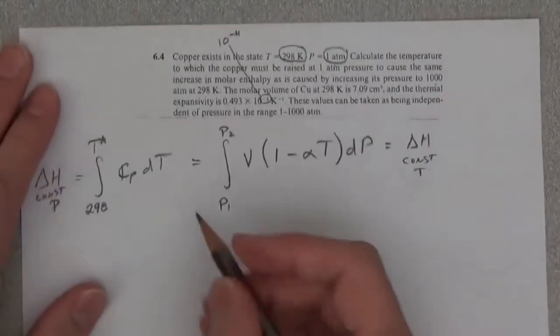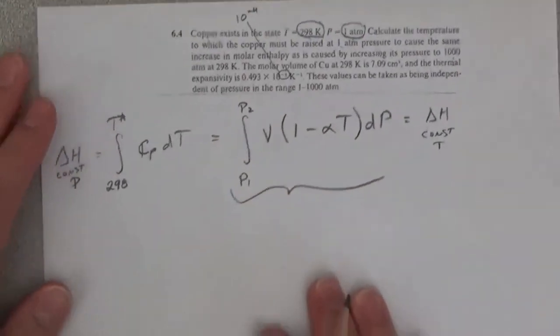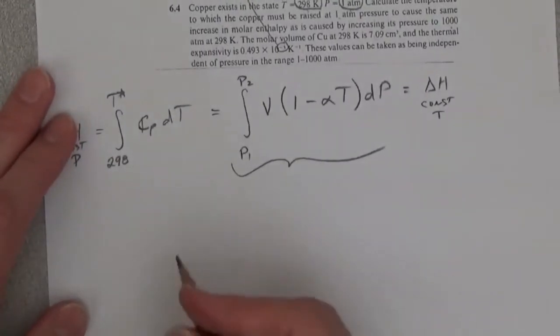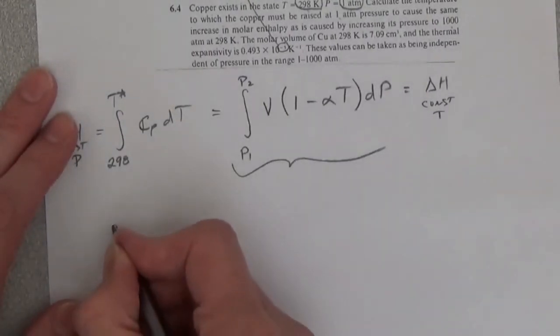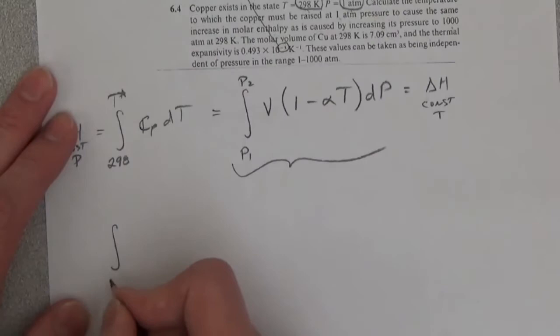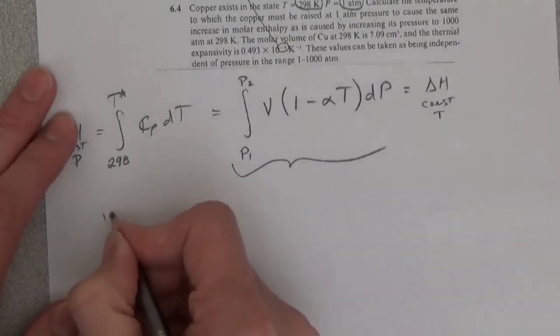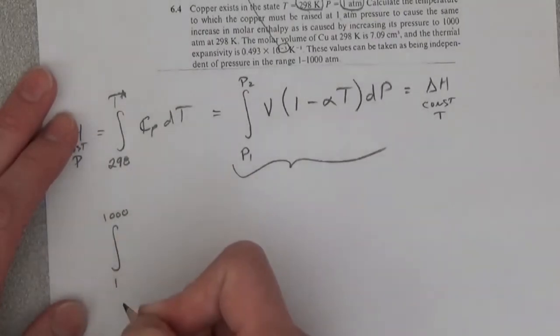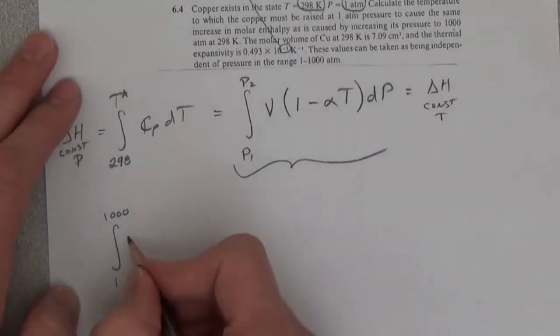Okay, so let's get this first. That's the integral from 1 to 1,000 atmospheres times V.